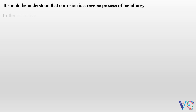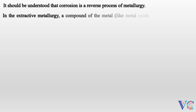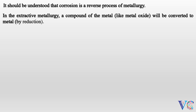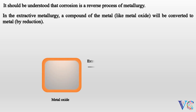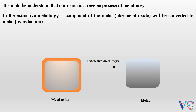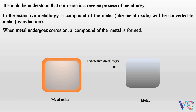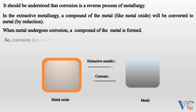In extractive metallurgy, a compound of the metal, like metal oxide, will be converted to metal by reduction. When metal undergoes corrosion, a compound of the metal is formed. So corrosion is a reverse process of metallurgy.